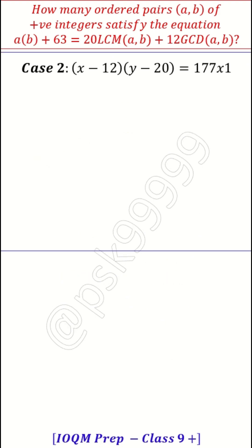Now, go to the case 2. This is my case 2. So in this case, (x - 12)(y - 20) = 1 × 177. y - 20 = 1 or y = 21. x - 12 = 177 or x = 189. Now, in this case, what happens? 21 divides 189, correct. So this means it's a solution. It's a possible solution.